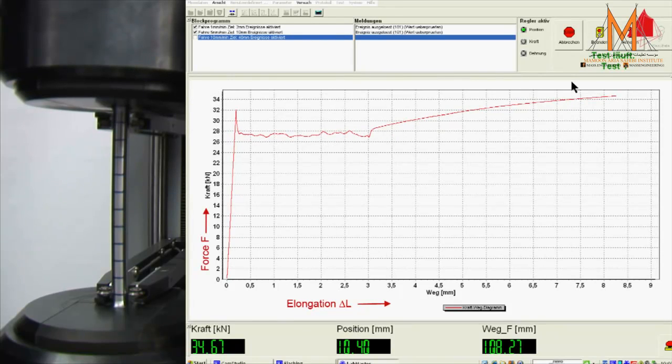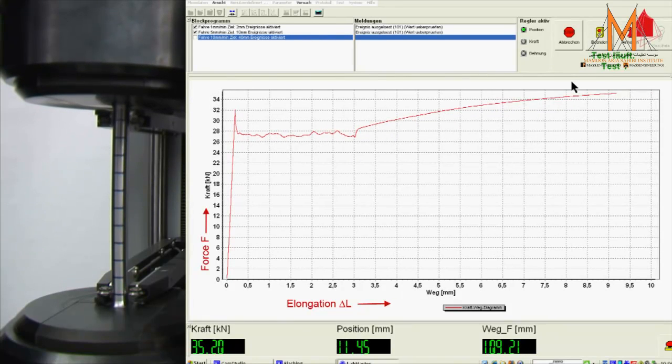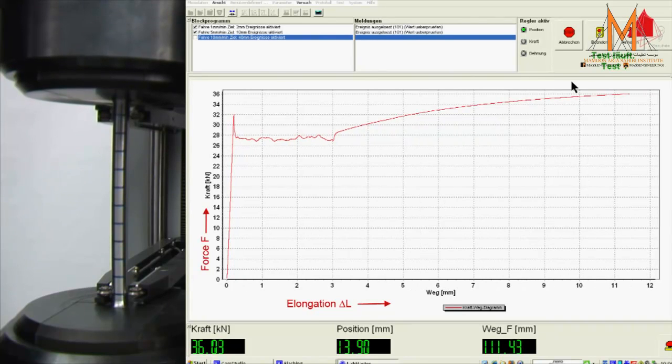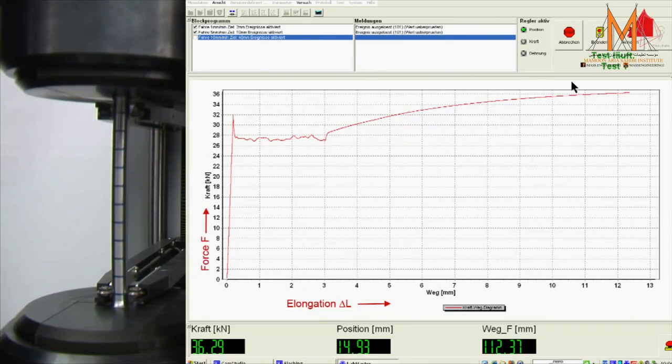Up to the point of maximum force, the test piece is strained uniformly along its length. This means that the test piece gets longer and thinner, but keeps a cylindrical shape.